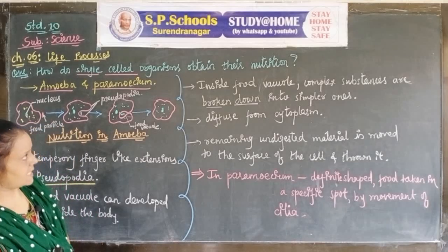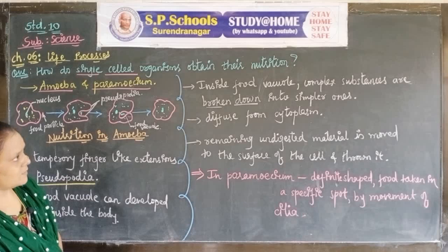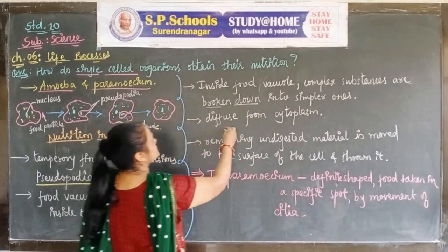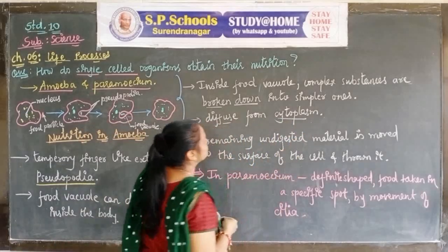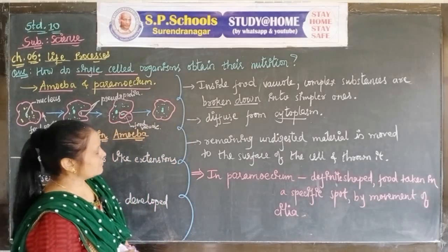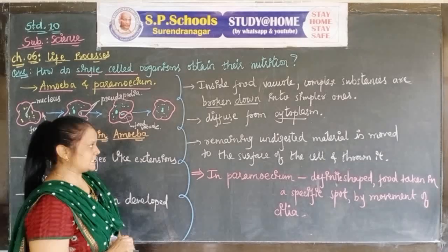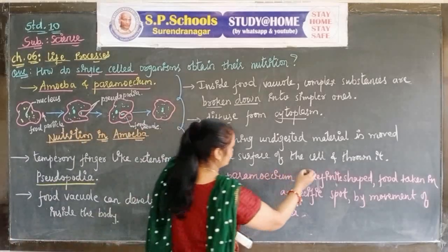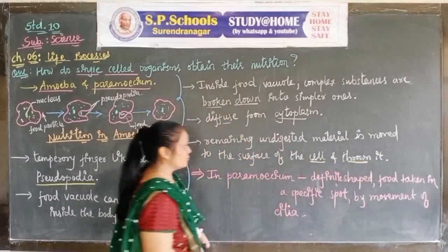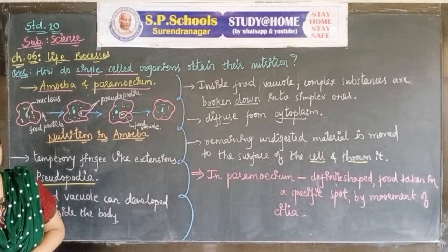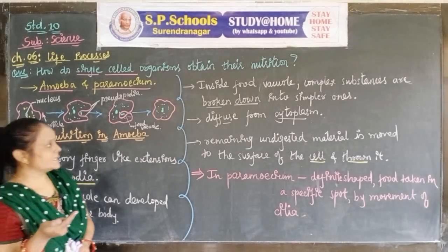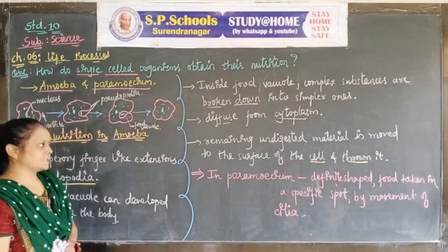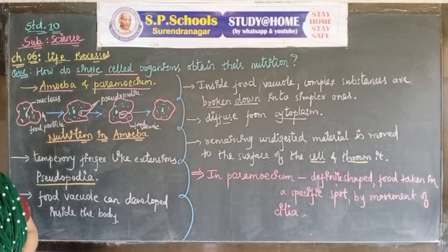Complex substances are broken down inside the body and converted into simpler ones. When the food material is broken down, it diffuses from the cytoplasm into the cell. The remaining undigested material is moved to the surface of the cell and thrown out. Food can be absorbed through the surface of the cell and unwanted undigested material is expelled at the surface of the cell.